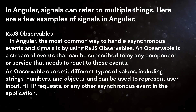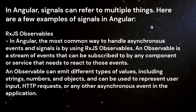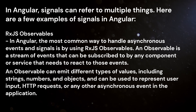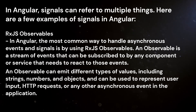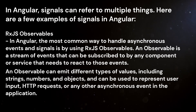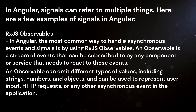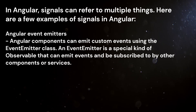An observable can emit different types of values, including strings, numbers, and objects, and can be used to represent user input, HTTP requests, or any other asynchronous event in the application.